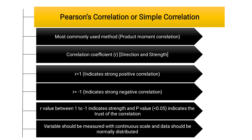To apply Pearson's correlation and measure the strength of the relationship between two variables, the variables must be measured on a continuous scale or discrete scale. A very important assumption is that the sample data should be normally distributed — meaning your data should form a bell curve according to the central limit theorem. If the data is not normally distributed, we cannot apply Pearson's correlation.